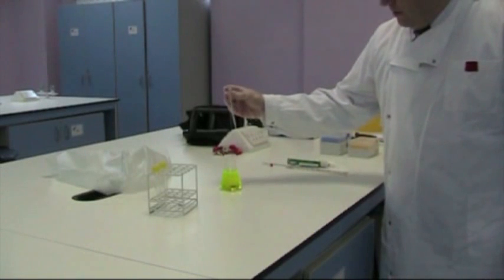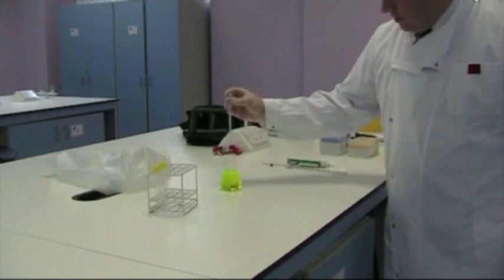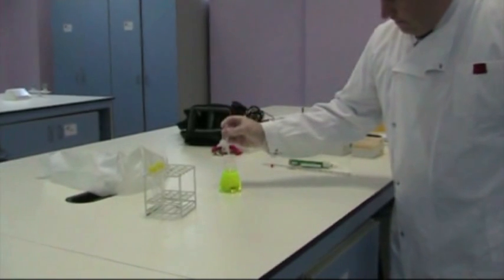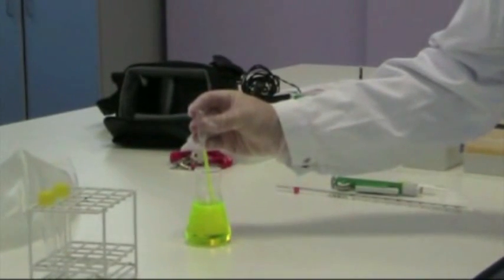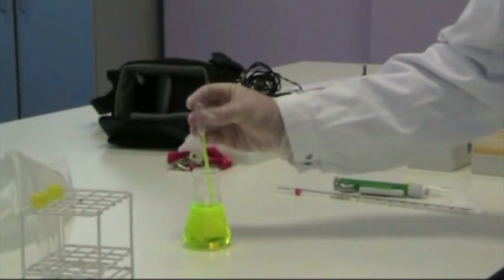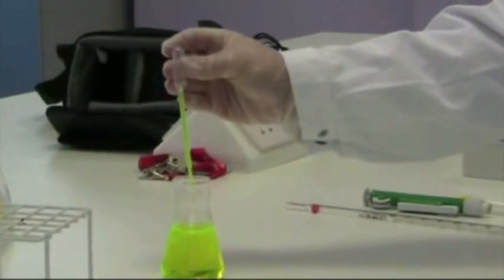So in order to draw the liquid up squeeze the air from the bulb at the top with your finger and your thumb. Put it into the liquid and gently draw it up until it reaches this one mil point here. Remember this isn't very accurate this is just for speed.